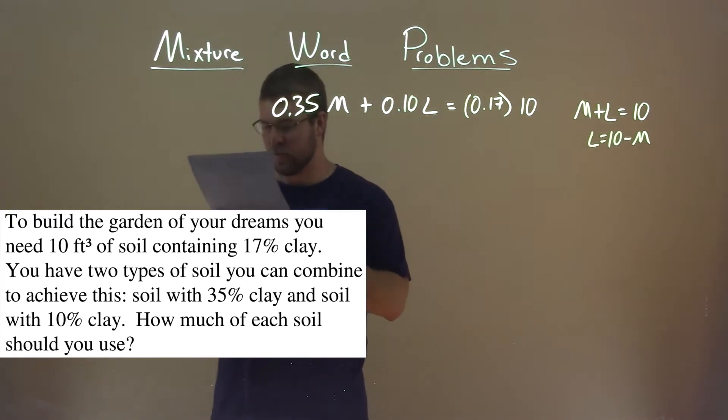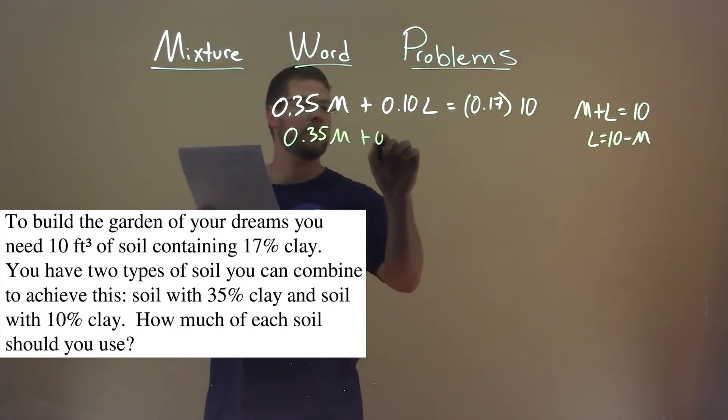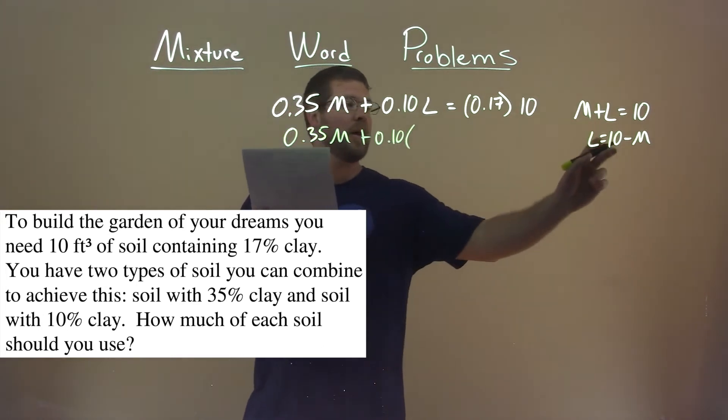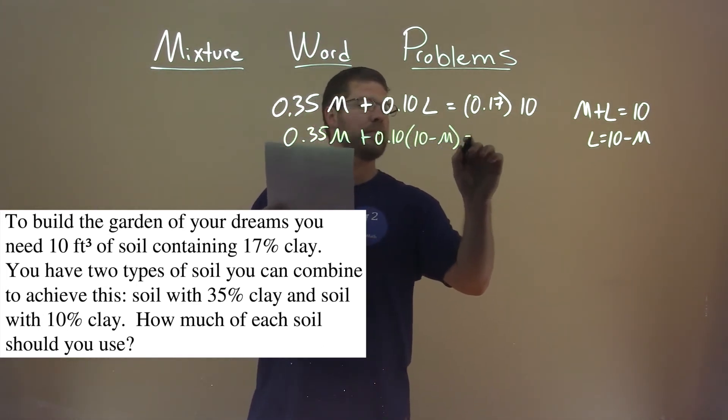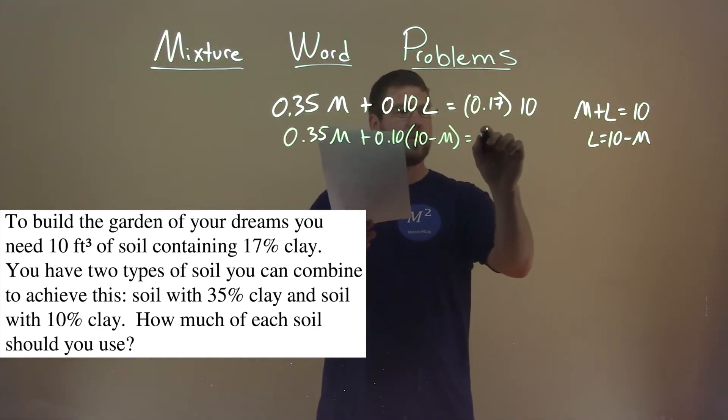So we have to use substitution, or there's many methods, but I'm using substitution. So 0.35M plus 0.10, instead of L, I have 10 minus M here, is equal to 0.17 times 10, which is 1.7.